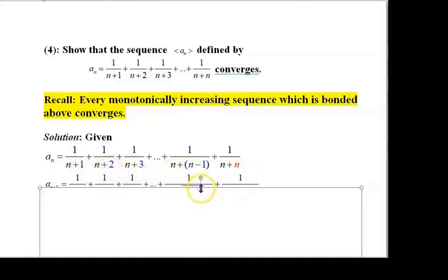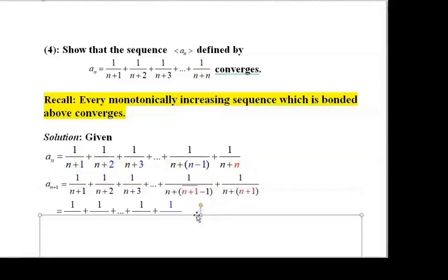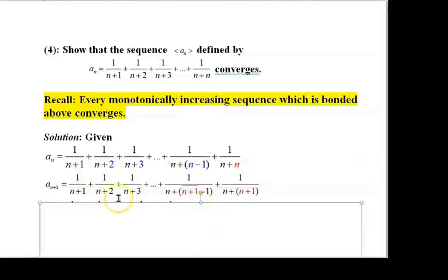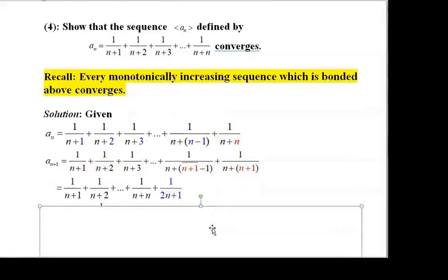To write aₙ₊₁, we replace n by n+1 only in the second term, not the first term. When we replace this n by n+1, we get n + (n+1), therefore the new last term will be 1/(2n+1).